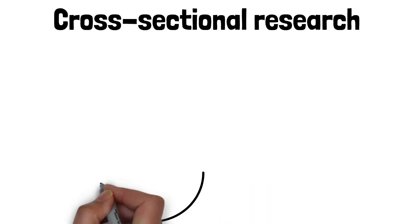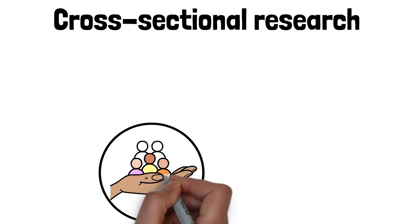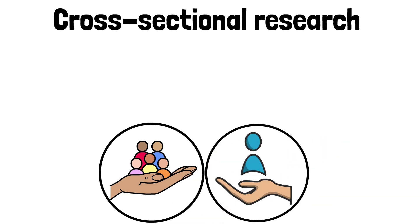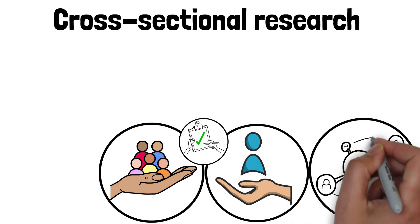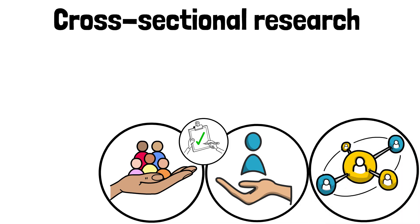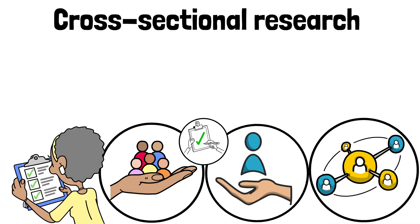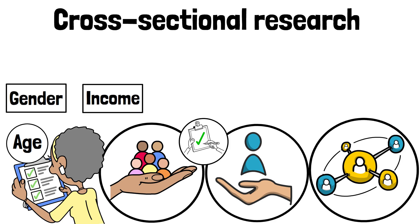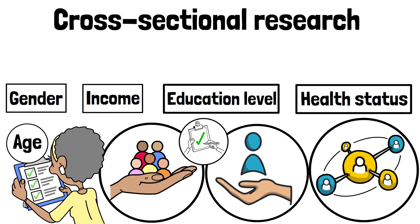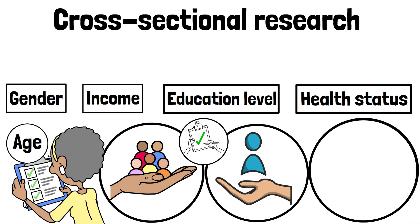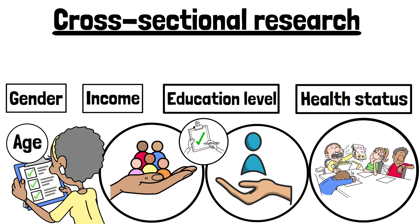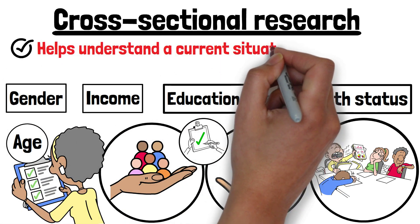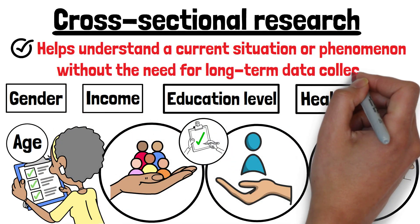Cross-sectional research is a type of study design that analyses data from a population or a representative subset at one specific point in time. Researchers gather data on characteristics like age, gender, income, education level, or health status all at once. Unlike other methods that require following subjects for months or years, cross-sectional studies provide a snapshot that helps understand a current situation or phenomenon without the need for long-term data collection.